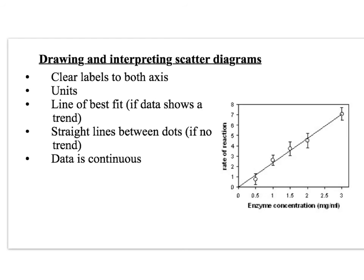Scatter diagrams or line graphs: again, clear labels to both axes. The independent variable goes on the x-axis — so enzyme concentration on the bottom — and rate of reaction on the y-axis, which is what you're measuring. Marks can be lost for not including units for rate of reaction, which is a unit per time, such as centimetres cubed per minute if measuring volume of gas. A line of best fit is drawn when there's a clear trend. In biology, though, there's often not a clear trend — such as an enzyme-temperature graph that goes up then down — so you draw straight lines between points dot-to-dot with a ruler. You can also include standard deviation bars on a scatter plot to assess whether differences between points are significant.